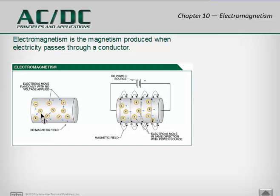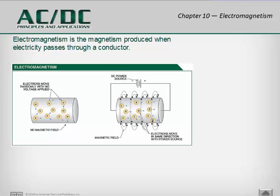With no electrical current, every electron is moving in its own direction and all of their magnetic fields do not add up. But once we apply electrical current through this wire — in this case a DC power source — all of the electrons will line up and all of their magnetic fields will aid one another, producing a magnetic field around that wire. Some applications of this principle include solenoid valves, electromagnets, electrical motors, and electrical generators.